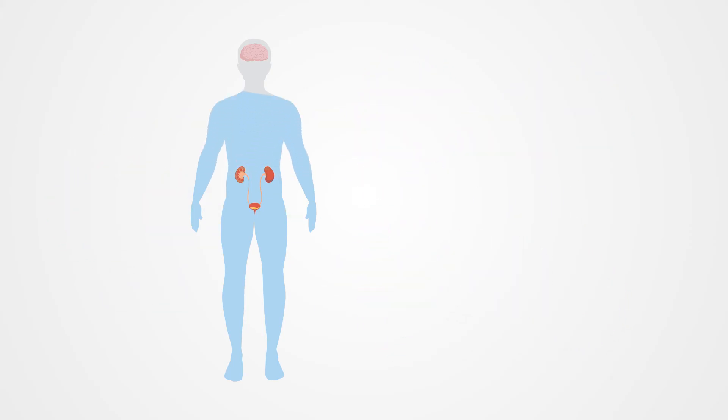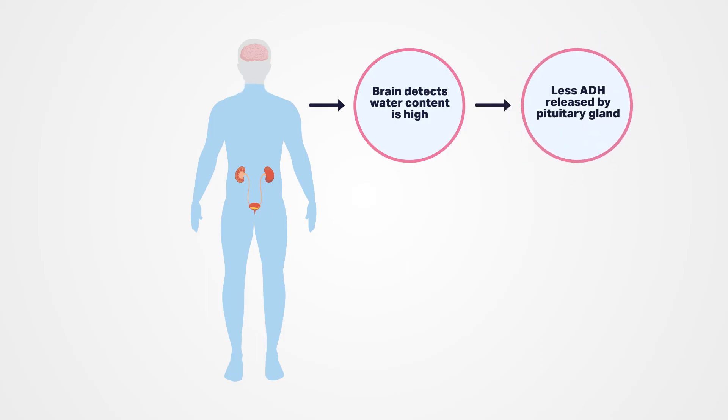If the water content of the blood increases, the opposite occurs. Our brain detects that the water content is too high and directs the pituitary gland to release less ADH.